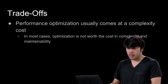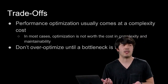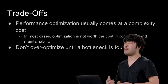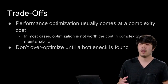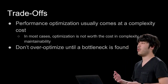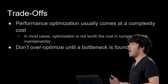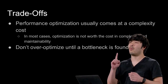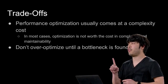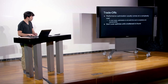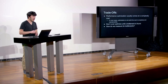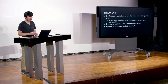In general, you don't want to over-optimize anything until you've found a bottleneck — something that's slow enough that it slows down your entire app. So how do we actually measure for these bottlenecks?